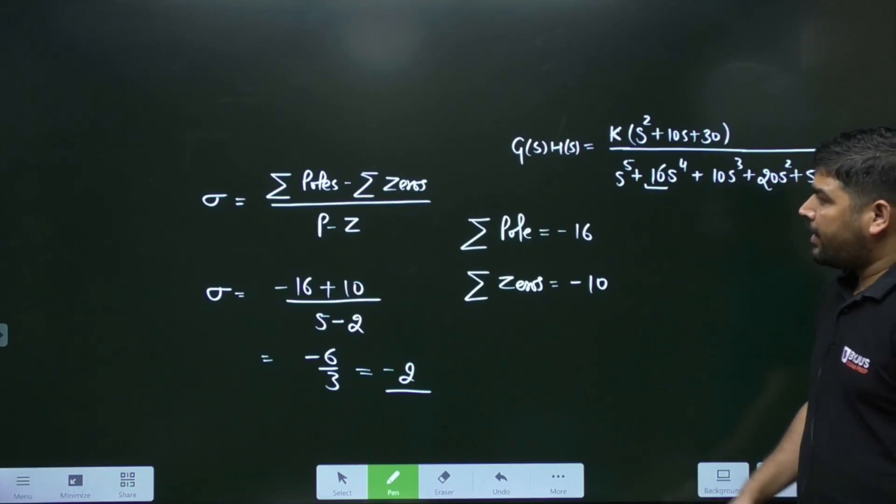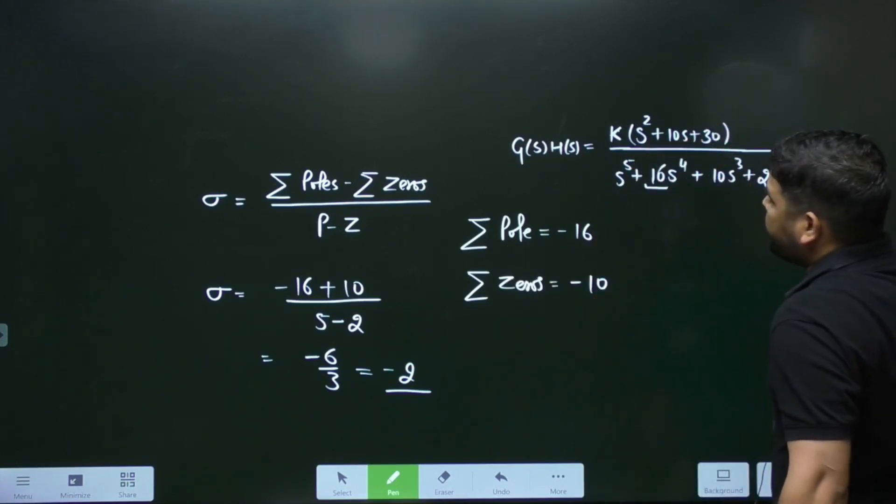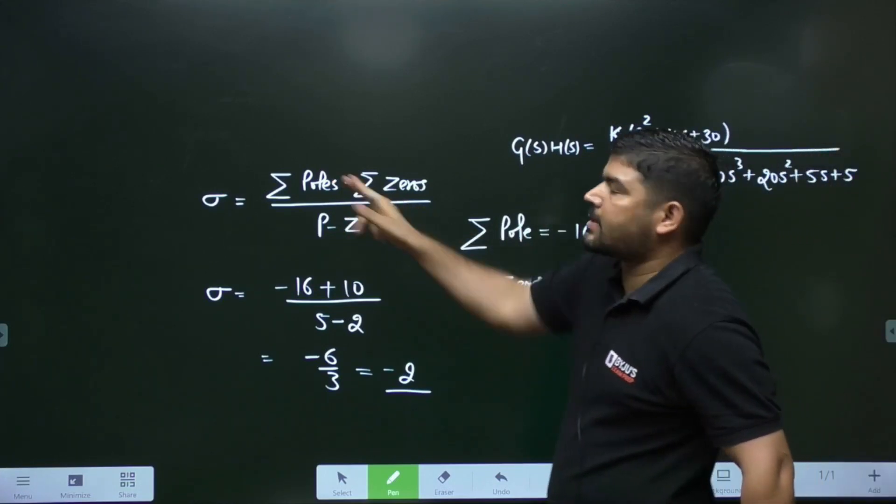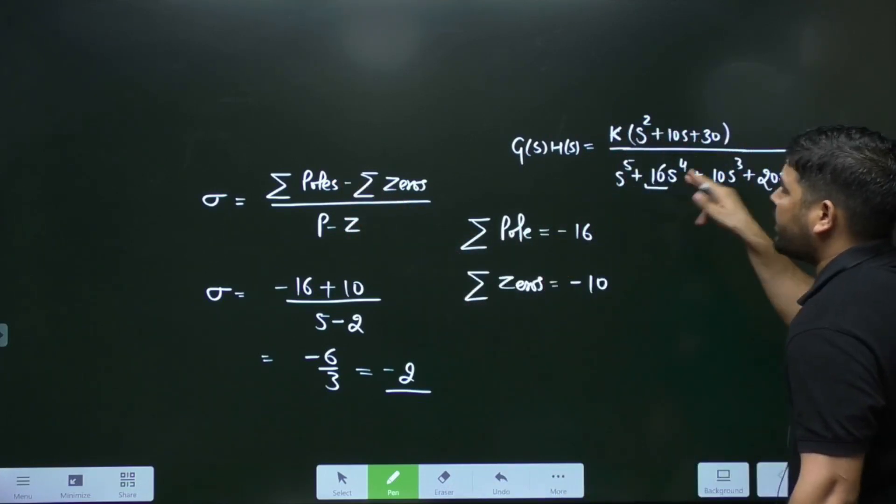Now you can see that in this type of problem, you cannot calculate the pole location. So if you cannot calculate the pole location, how to calculate the sum of the pole? Directly, you can calculate from there.